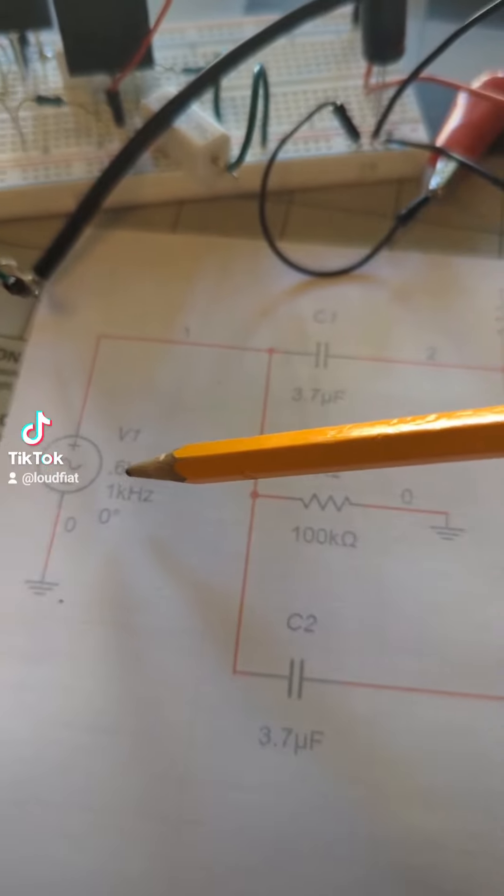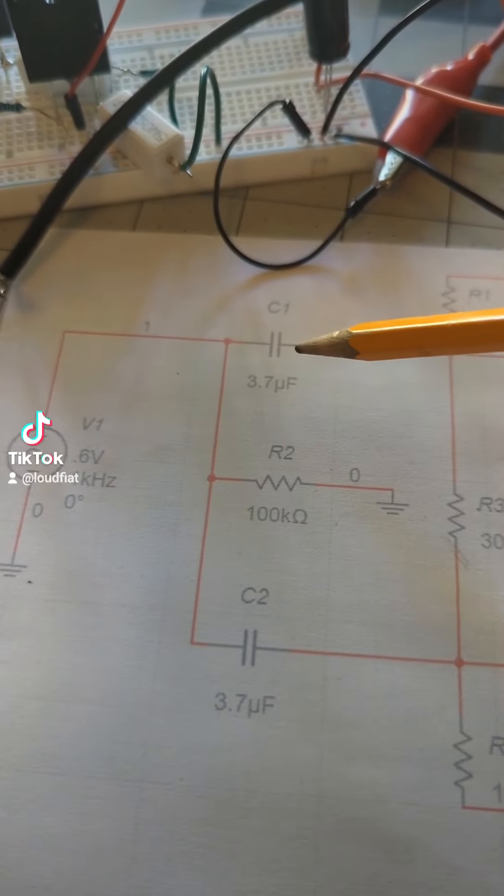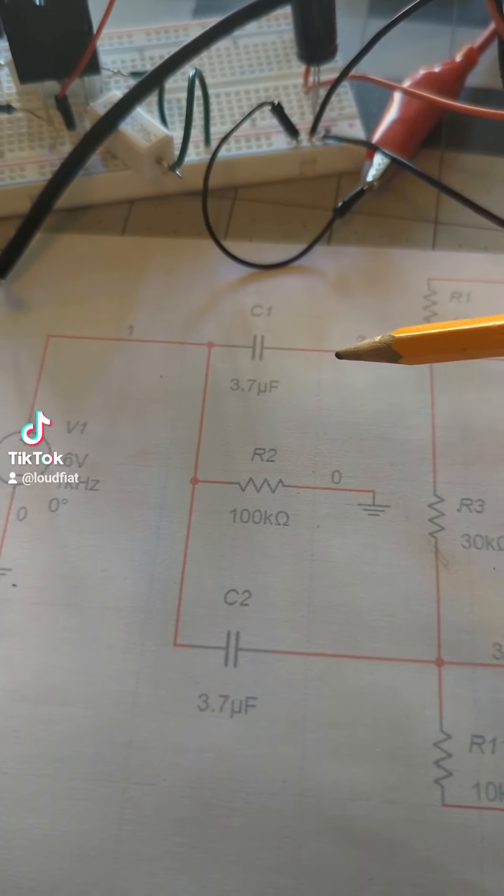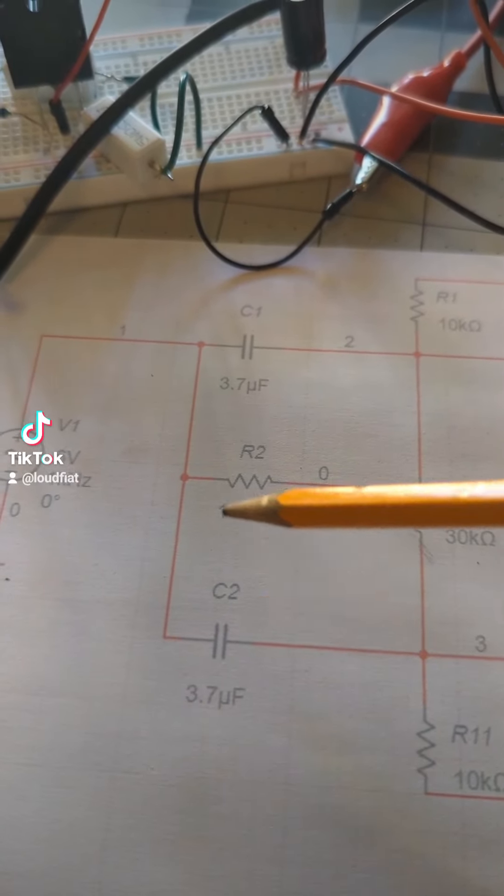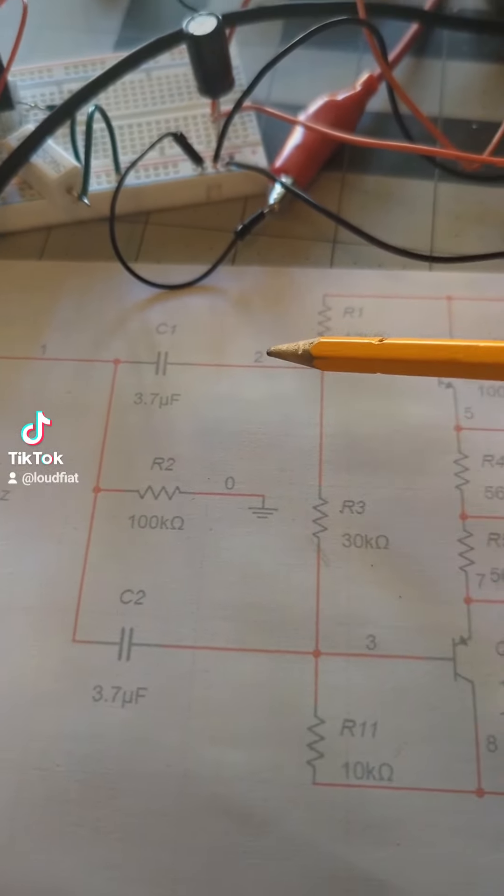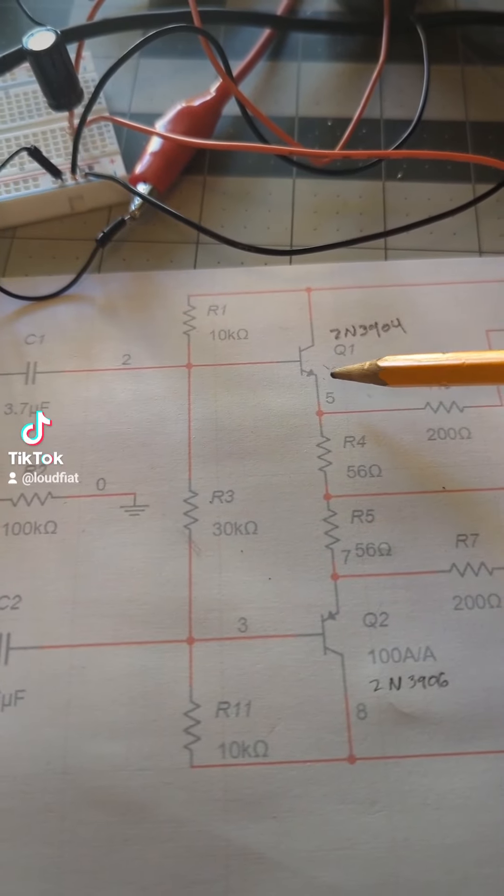The phone signal goes into these capacitors, which essentially help eliminate DC coupling here. So they'll provide an AC wave. That bleeds into the first set of transistors.